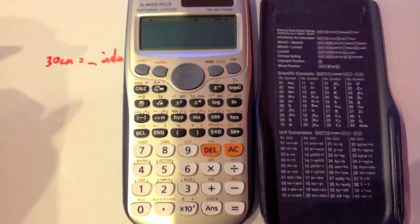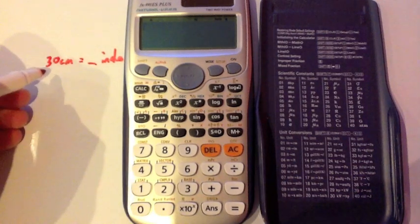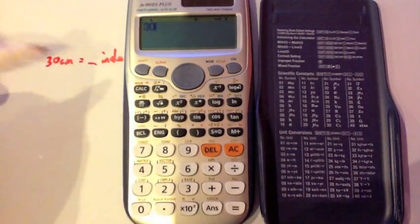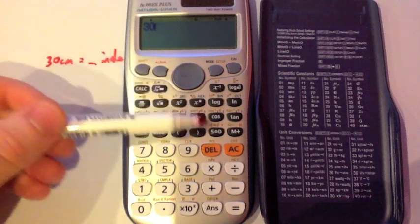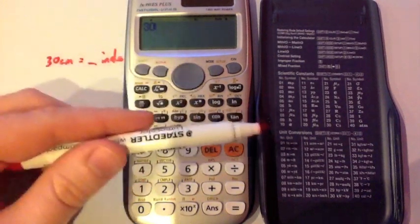To do a unit conversion, such as what 30 centimeters would be in inches, you first of all type in 30. You just double check the conversion we want is on the list, so centimeters into inches. Yes, it's the second one here. So it's on the list so we can do it.